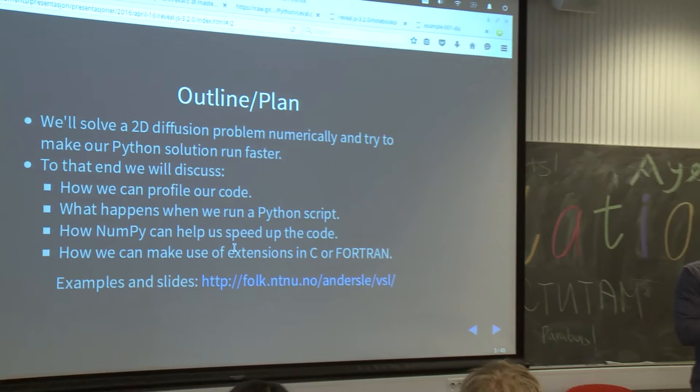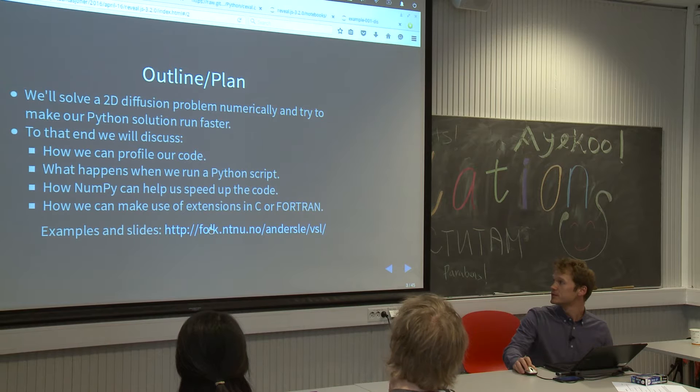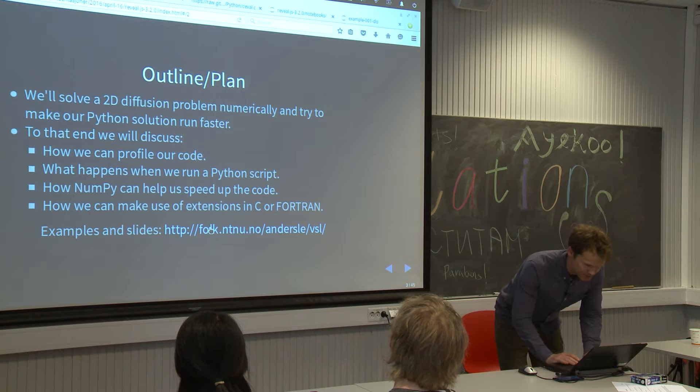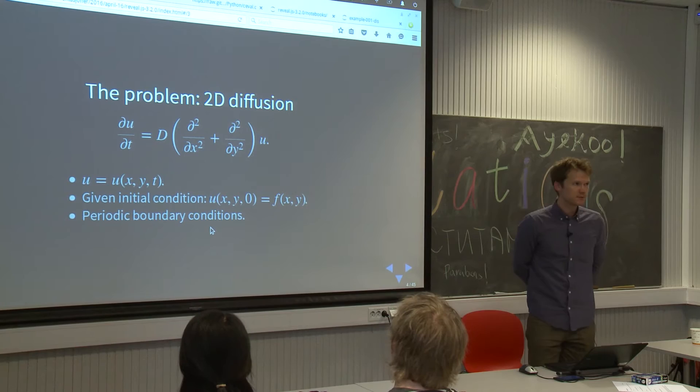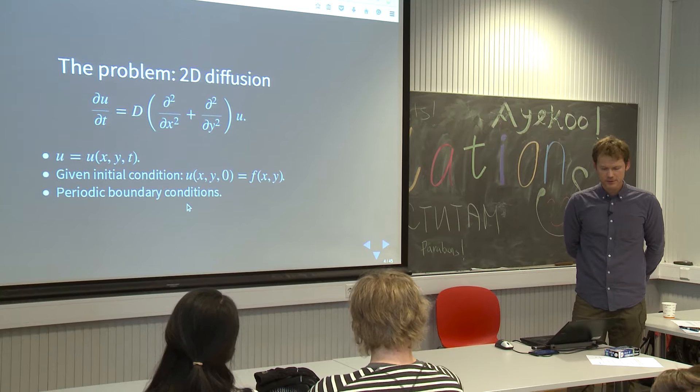If you have brought your computer or even your phone, you can look at the slides and some of the examples if you go to the address shown here. You can try to run some of the scripts we will be running. To jump into the problem we will be looking at: we will solve the diffusion equation in two dimensions, giving some initial condition — just a function — and we have periodic boundary conditions.